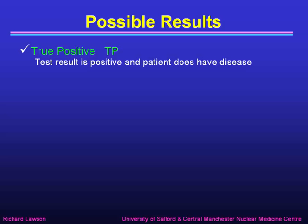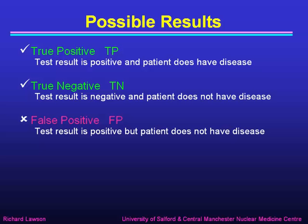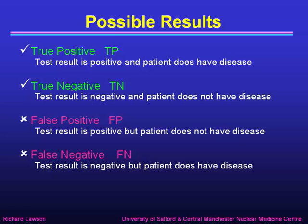The possible outcomes of our test would be either a true positive result, where the test result is positive and the patient really does have the disease, or a true negative result, where the test result is negative and the patient definitely does not have the disease. But we might be wrong: a false positive is where the test is positive but the patient doesn't have the disease, and a false negative is where the test is negative but the patient does have the disease.